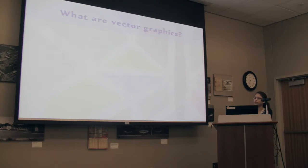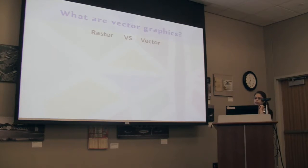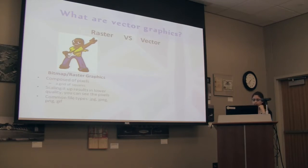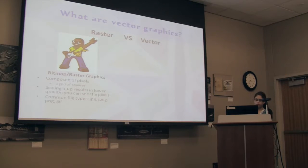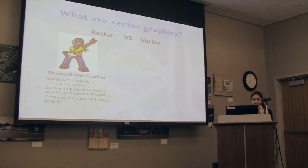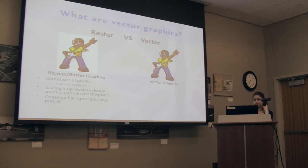Taking a step back though — what are vector graphics? It's kind of easiest to compare them to the images that most people are familiar with, which are raster, even if you might not know that they were called that. Bitmaps or raster graphics are composed of pixels — just a bunch of squares in a grid, each with a color assigned to it. If you scale them up, they lower in quality because you can see all the pixels. You never want to make them bigger than what you saved them at. You'll often see these as JPEGs, PNGs, and GIFs.